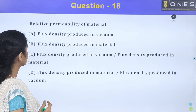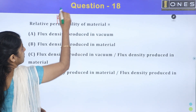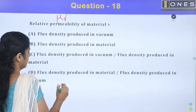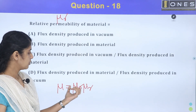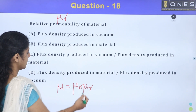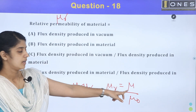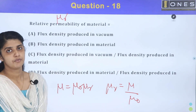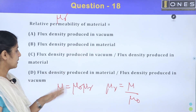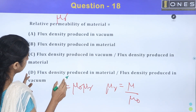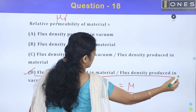Next question: Relative permeability of a material. Absolute permeability μ = μ₀ × μr. Therefore, relative permeability μr = μ / μ₀ — that is, the permeability of the material divided by the permeability of vacuum. Equivalently, μr equals flux density in the material divided by flux density produced in vacuum. Option D is the correct answer.